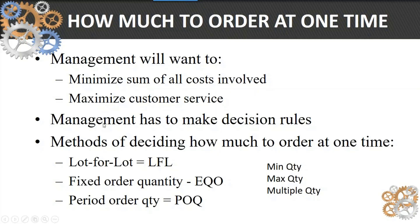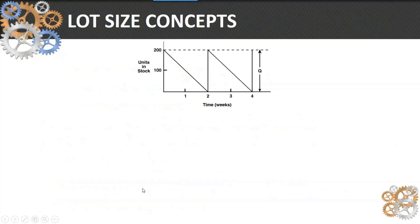So we as managers need to make some decision rules. The methods of deciding how much to order are basically lot for lot, the fixed order quantity or what we call EOQ, period order quantity, and then we have some modifiers: min, max, and multiple quantities.